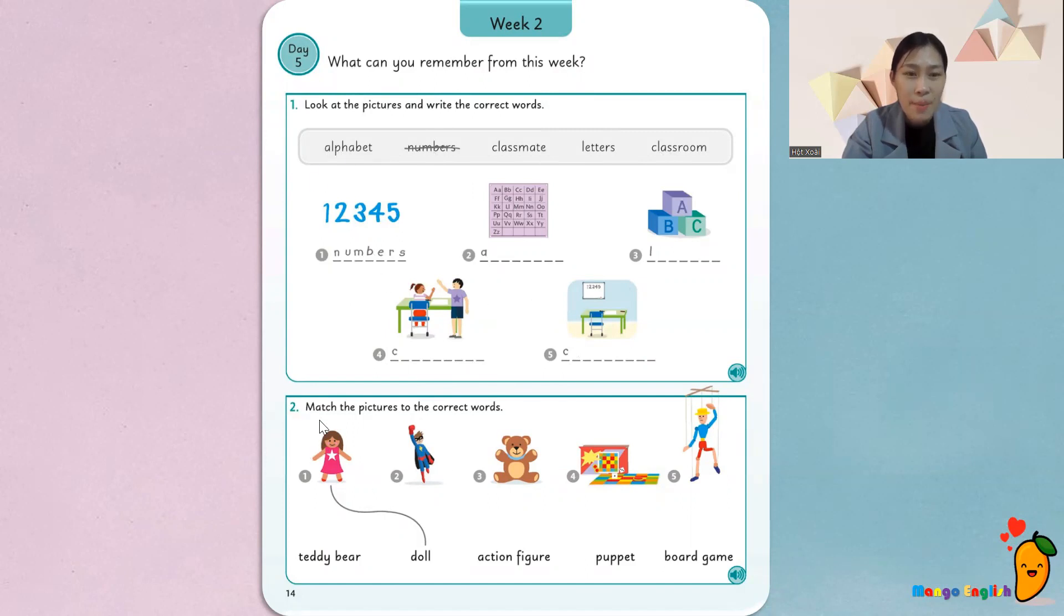That's to match the pictures to the correct words. Hãy nối các bức hình với từ đúng. Thế thì, đây, ví dụ đây. Hình đầu tiên đúng không? Đây là con búp bê. Từ búp bê trong tiếng Anh là Doll. Tương tự như vậy. Những hình này là chữ gì? Thì mình sẽ nối xuống. Let's match.